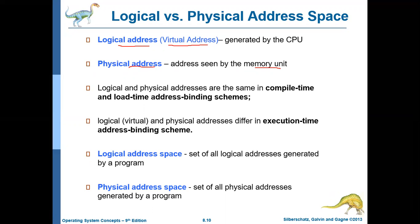If you recall, in the last lecture we discussed three types of binding schemes: binding at compile time, binding at load time, and binding at execution time. If the binding happens at compile time or at load time, then the logical address and the physical address will be the same — there won't be any difference.